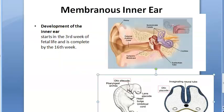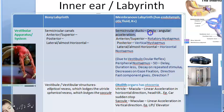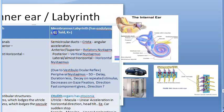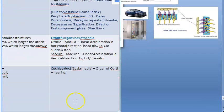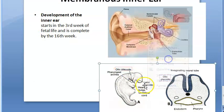Now let's look at the development of the inner ear. The inner ear has membranous and bony parts. The blue inside represents the membranes and the purple outside is the bony part. The membranous labyrinth includes the semicircular ducts, utricle, saccule, and cochlear duct. Development starts in the third week of fetal life and is completed by the 16th week.